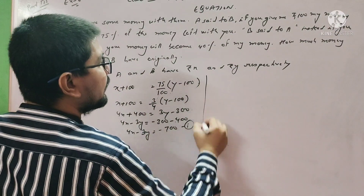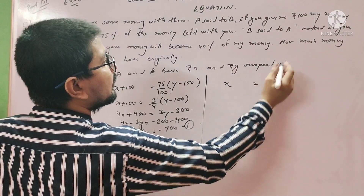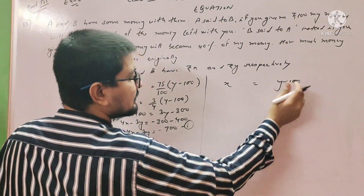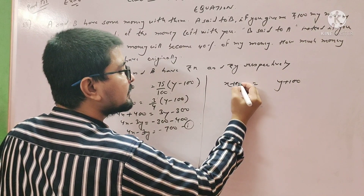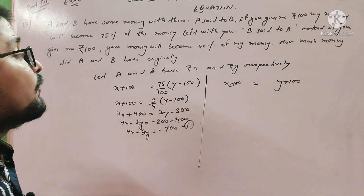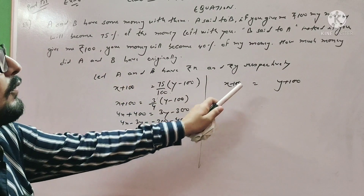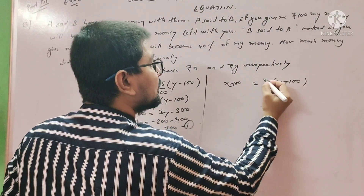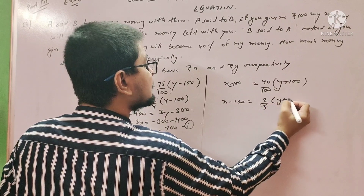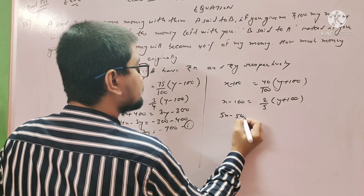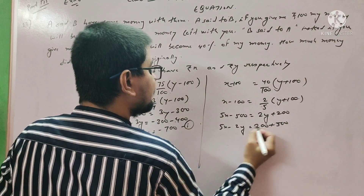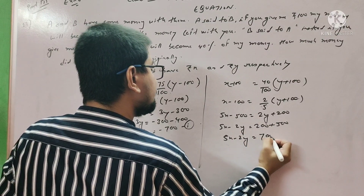For the second condition: B said to A, if you give me 100 rupees, your money will become 40% of my money. So X minus 100 equals 2 by 5 times (Y plus 100). Expanding: 5X minus 500 equals 2Y plus 200, giving 5X minus 2Y equals 700. This is equation 2.